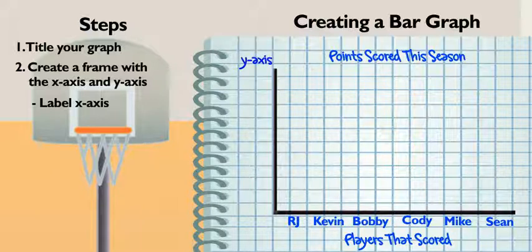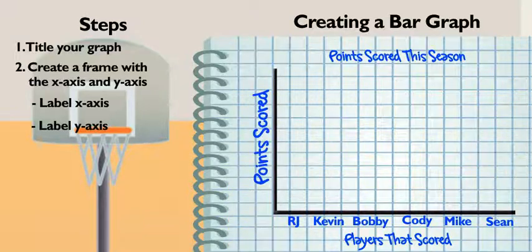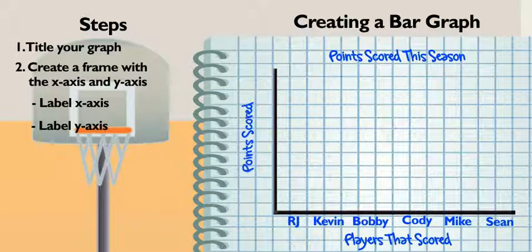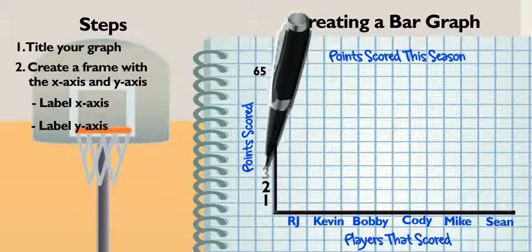Now what about the Y axis? The Y axis is kind of like the ruler. It's called the Frequency Axis. It shows the amount of what you are measuring. Title it, too. Hmm. Points scored? Now what's the largest number of points? 65. I'll just number it 1, 2, 3, 4...